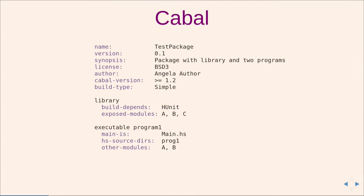Let's start with how Haskell does packaging. Their tool is called Cabal and you would have a file like this — it's a special kind of syntax. At the top you'll see just some metadata about the package, and at the bottom you can say your software is a library but there is also an executable, and it has these dependencies, it lies in the source directory, and so on.